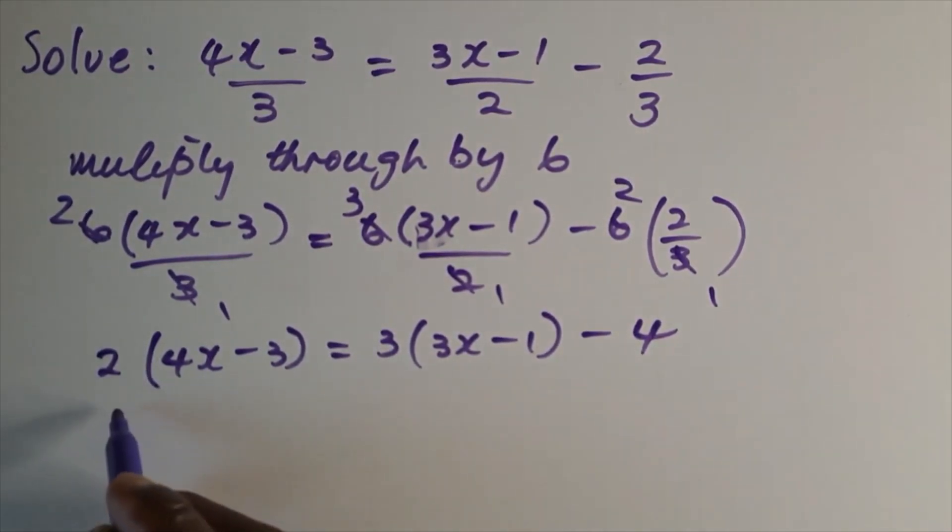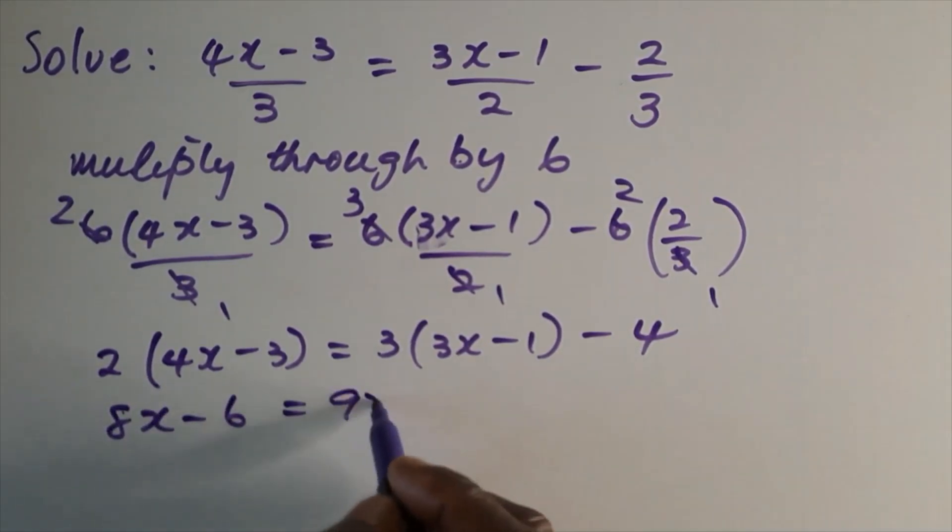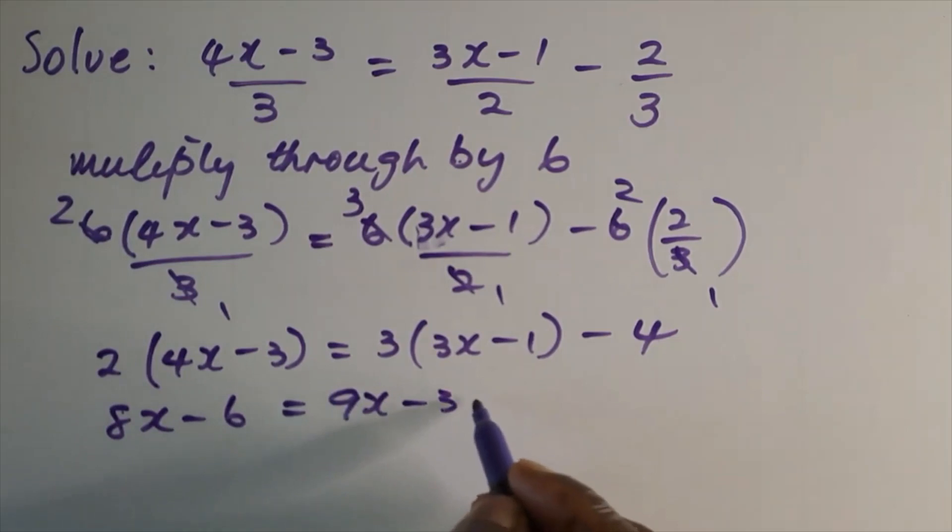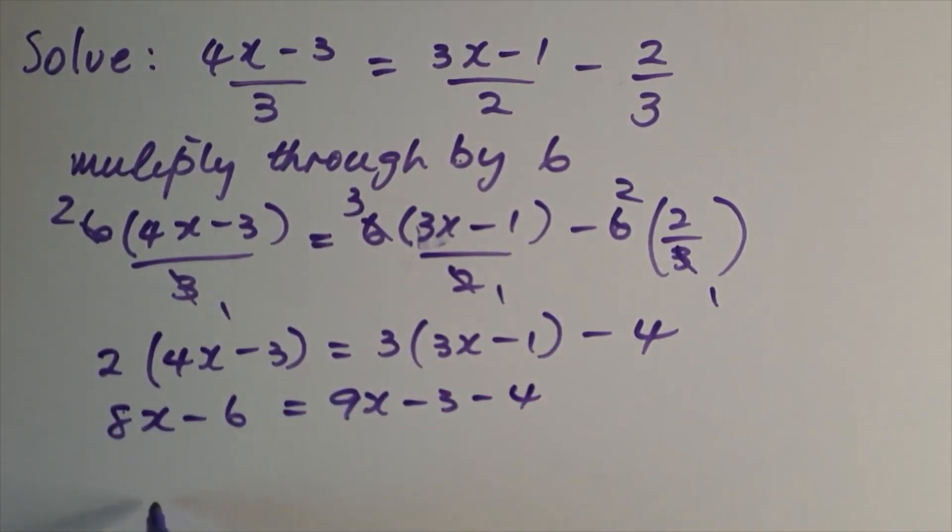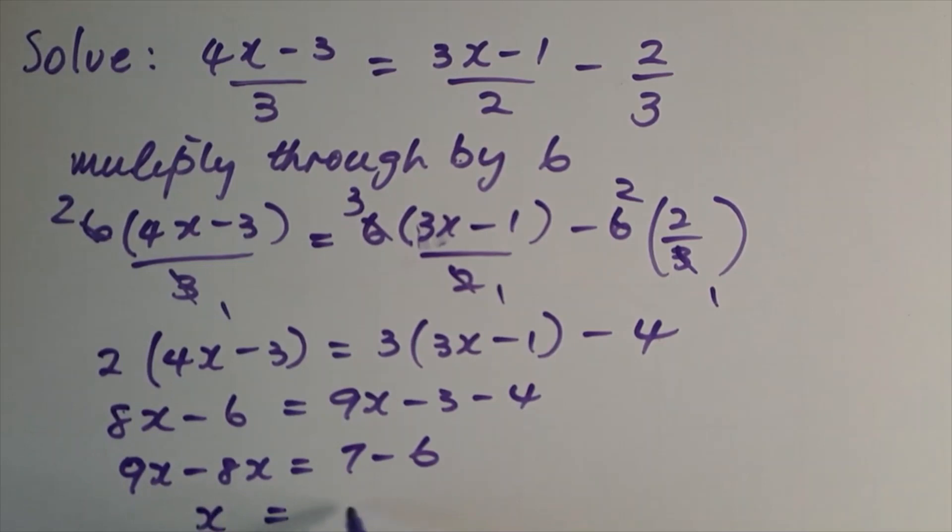We clear the brackets now: 8x - 6 = 9x - 3 - 4. And we simplify this: 9x - 8x = 7 - 6, which gives us x = 1.